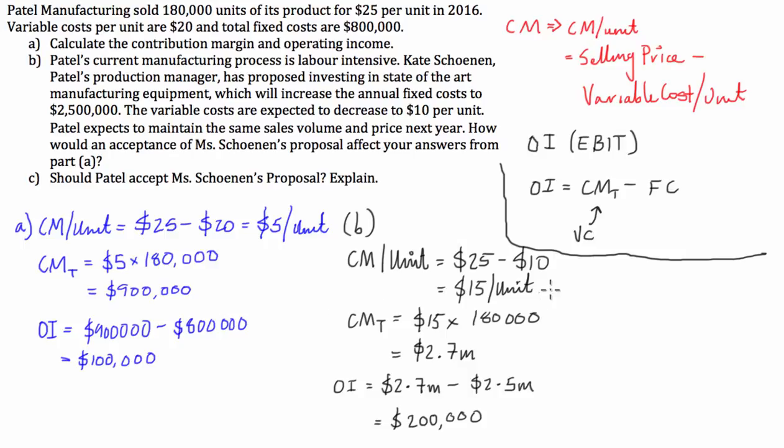So, on to part C. Well, there are positives and negatives to accepting it. On the face of it, you should say yes, because operating income increases by $100,000. But, if we were using this as a real-world example, with these new fixed costs of $2.5 million, if our units that we sell drops, the operating income is going to be wiped out fairly fast.